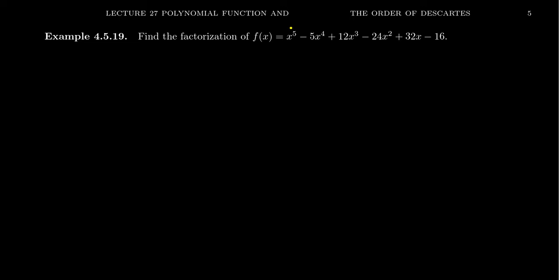If we look at variation of signs, it goes from a positive to a negative. That's one variation. Then negative to positive, positive to negative, negative to positive, positive to negative. You'll notice in this situation it varied signs each and every time. So this tells us that the variation of signs is going to be 5. That tells us our polynomial will either have 5, 3, or 1 positive root here.